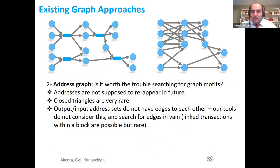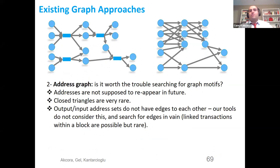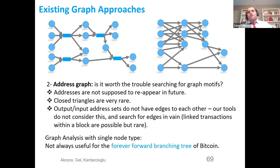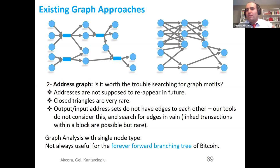Another problem with the address graph is that libraries for motif analysis, clustering coefficient, and similar metrics don't account for blockchain properties: addresses are discouraged from reappearing, closed triangles are very rare, and output-input address sets don't have edges to each other. Tools based on network science will just search for closing triangles and other structures in vain. For these reasons, graph analysis with a single node type on blockchain networks is not useful. Bitcoin and UTXO networks are forever-forward branching trees — it is more useful to consider them as growing trees.